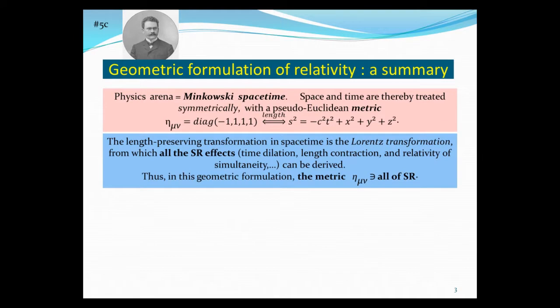The transformation that preserves this length is the Lorentz transformation. So once you know this is the kind of length, you have the transformation. Special relativistic effects like time dilation, length contraction, and relativity of simultaneity all derive from the fact that you have a metric of this type. So in some sense, the metric contains just about all of special relativity.